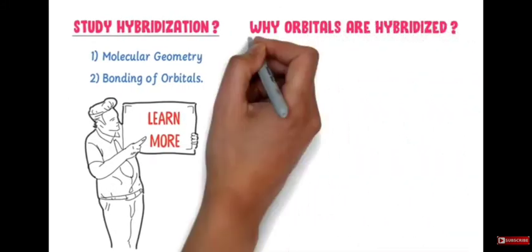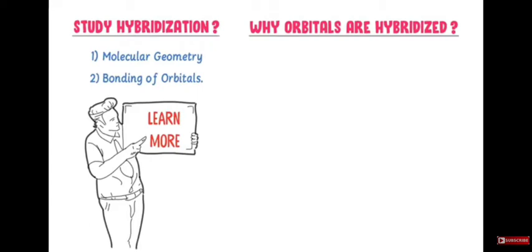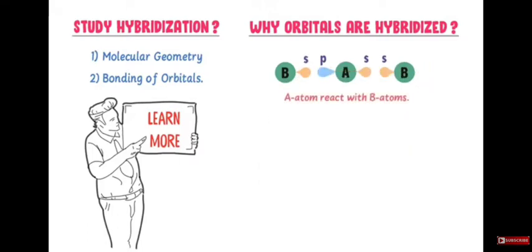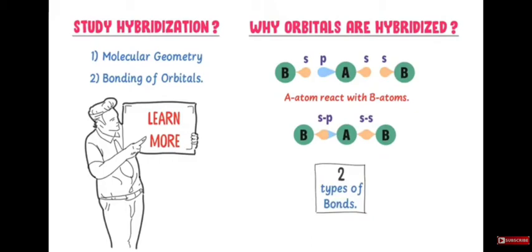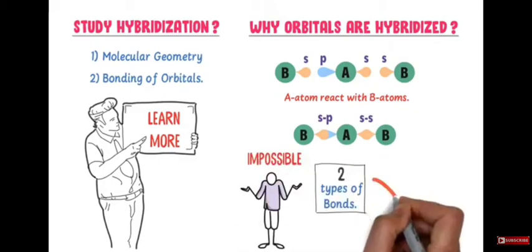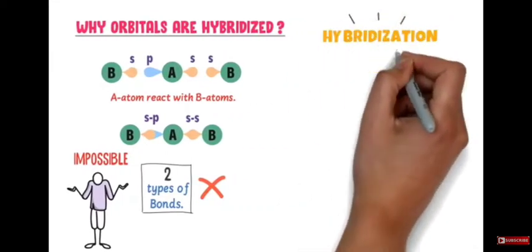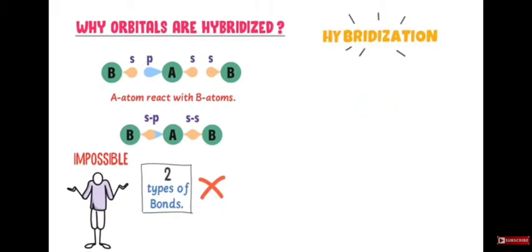Why does hybridization take place? Consider two types of atoms, atom A and atom B. Atom A has two orbitals — s orbital and p orbital — while atom B has only one orbital, like s orbital. When atom A reacts with two atoms of B, we see there is an S-S bond and an S-P bond formed, which means atom A formed two different types of bonds with the same atom B. This is impossible and incorrect, so we look to hybridization to solve this issue.